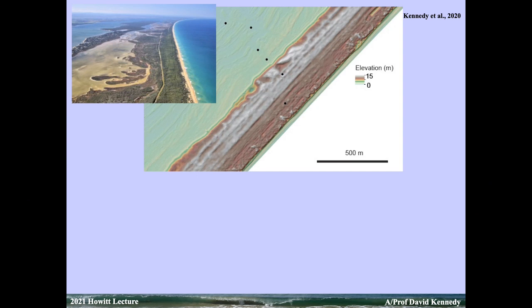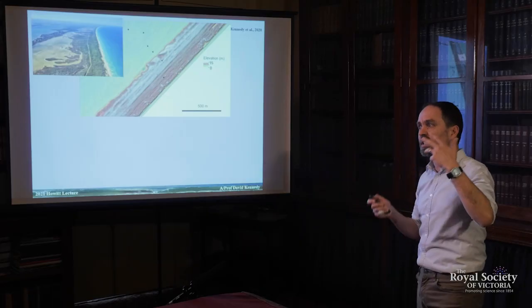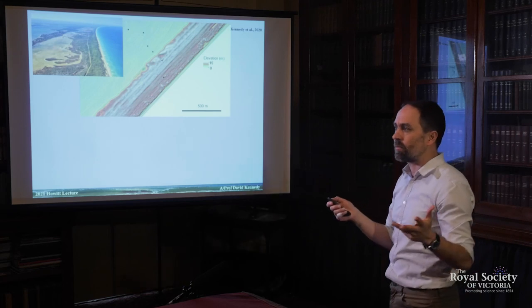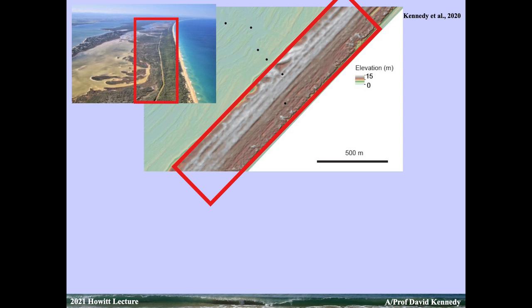The Bruun Rule underpins most coastal models, but you have to understand exactly what's happening within them. To take an example: some work I've done in the Gippsland Lakes looking at the evolution of 90 Mile Beach, looking along here towards Lock Sport and the Golden Beach area. When we look at the beach systems along here, what's the actual age, what's the evolution, and where are these things coming from?